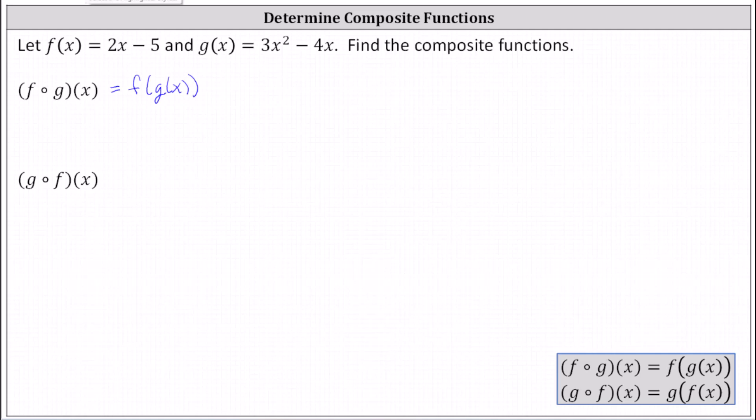Now we begin with the inner function of g of x. Notice we don't have a numerical input for the function g, and therefore we simply replace g of x with the function rule of 3x squared minus 4x. This indicates that f of g of x is equal to f of 3x squared minus 4x.